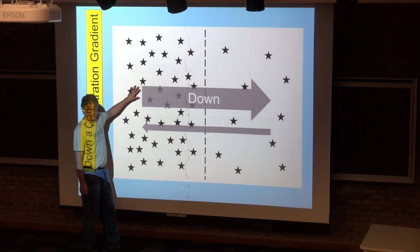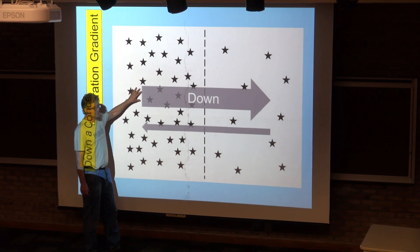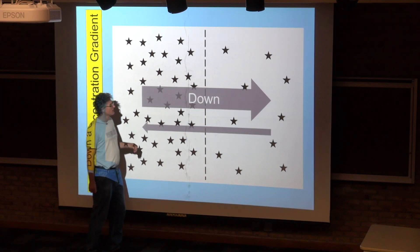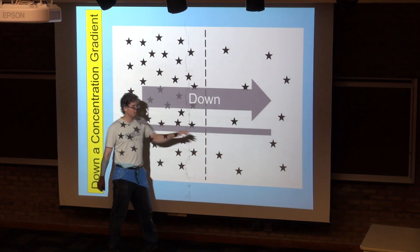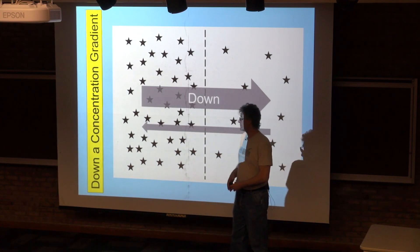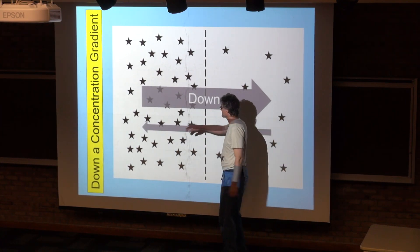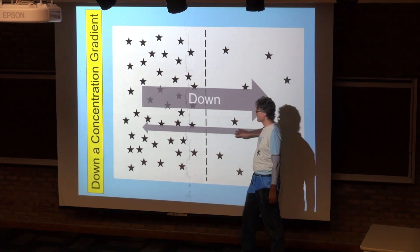There's simply more molecules here or substances, whatever this is, stars, on this side than there is on that side. So there's going to be more collisions with the membrane coming from this side than this side. In order for movement to occur across the membrane, collision has to occur first and the result is there's simply more movement going this way than there is this way.